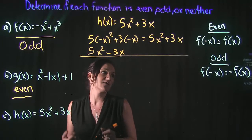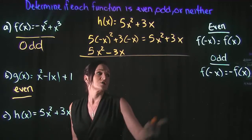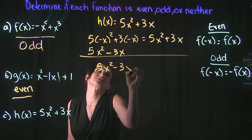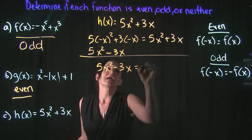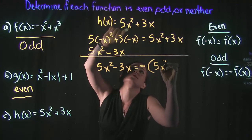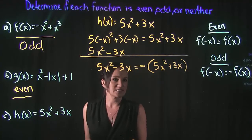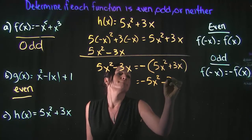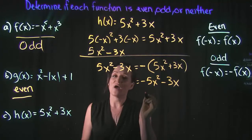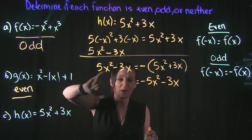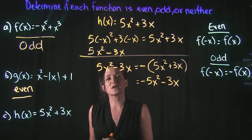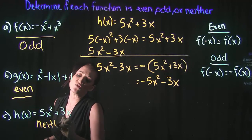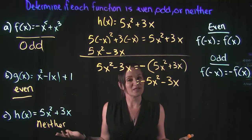Now let's test for odd. We plug in negative x, which gave us 5x squared minus 3x. The opposite of the whole function would be negative 5x squared minus 3x. These are not the same — we have positive 5x squared here and negative 5x squared there. So it's not even, it's not odd — this is what a neither case looks like. That's it for this video.